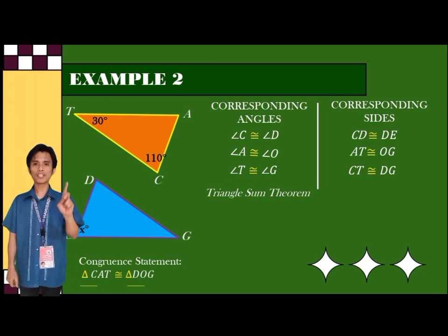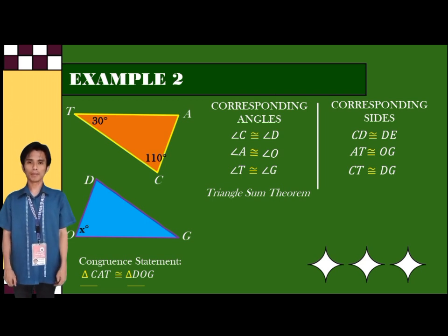We can solve one missing angle of a triangle by using triangle sum theorem. This theorem states that if we add the three angles of a triangle, it is equal to 180 degrees.